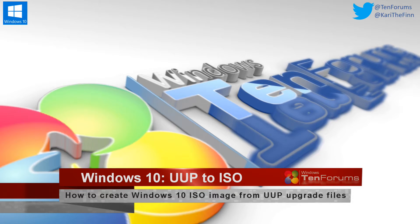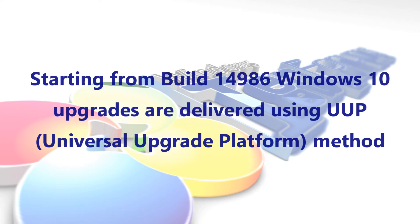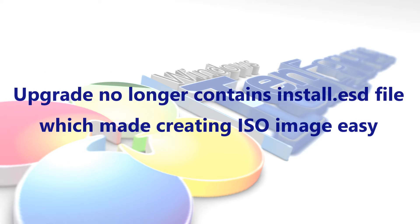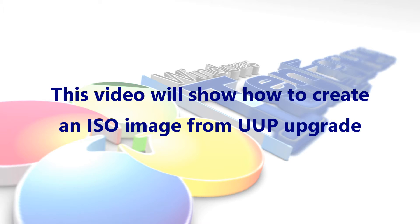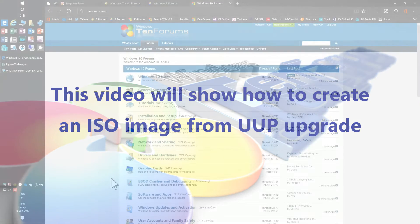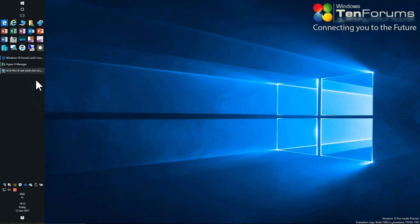Welcome to tenforums.com. Starting from build 14986, Windows 10 upgrades are delivered using the UUP method. Upgrades no longer contain the install.esd file, which made creating an ISO image easy. This video will show how to create an ISO image from a UUP upgrade. I will use a Hyper-V VM for this demonstration, my host being set for ESD upgrades.